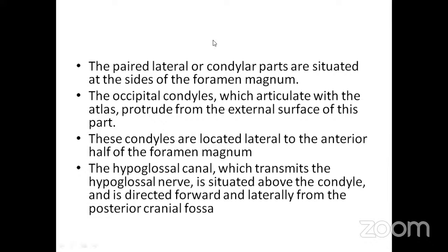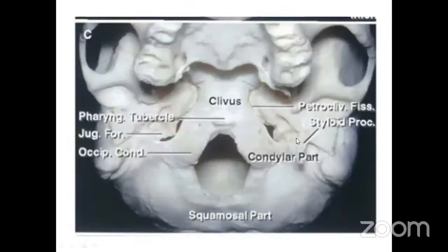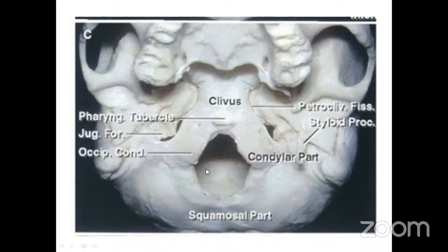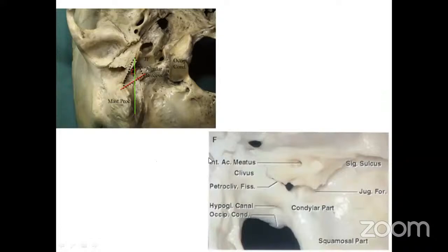The paired condylar parts of the occipital bone are situated at the sides of the foramen magnum. The occipital condyles articulate with the atlas (C1) and protrude from the external surface, located lateral to the anterior half of the foramen magnum. The hypoglossal canal, which transmits the hypoglossal nerve, is situated above the condyles and directed forward and laterally. The condylar part connects the clival and squamous parts forming the lateral margin of the foramen.